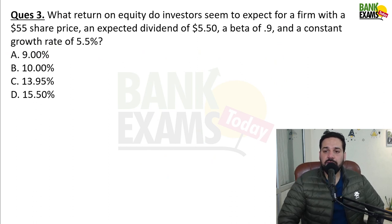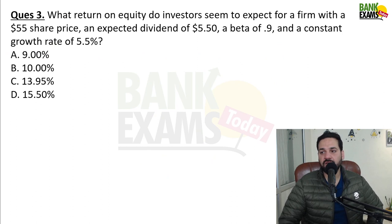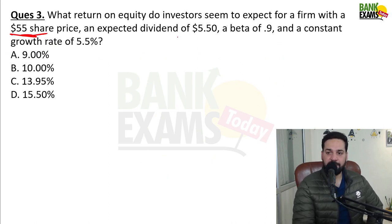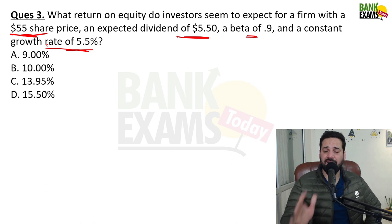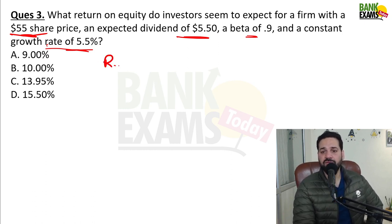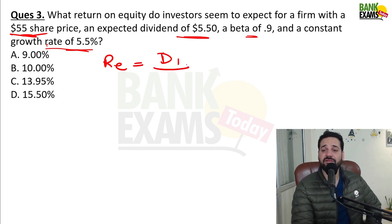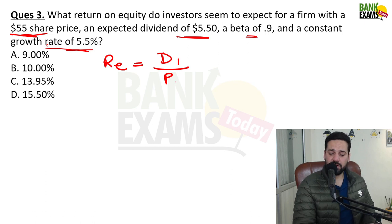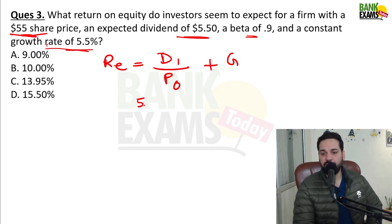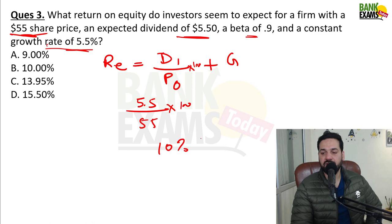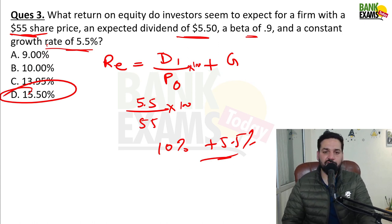What return on equity do investors expect for a firm with share price $55, expected dividend $5.5, beta available, and constant growth rate available? This is a tricky question — you must study the cost of capital chapter. Here we use the dividend growth formula: Return on equity = (Dividend next year / Current price) + Growth rate. So 5.5 / 55 × 100 = 10%, plus growth rate 5.5% = 15.5% is your answer.